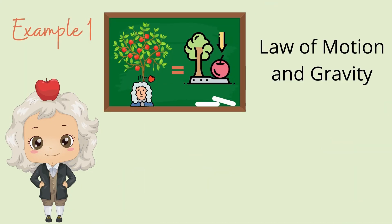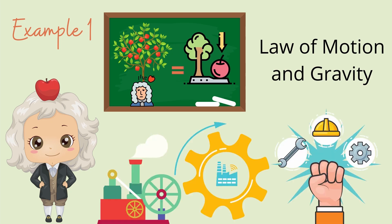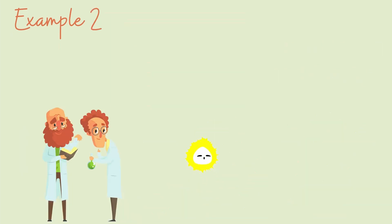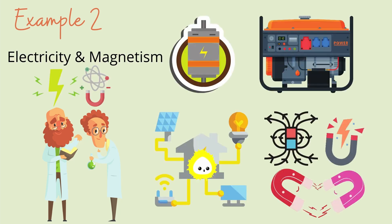For example, Newton discovered the law of motion and gravity that led to the industrial revolution. Michael Faraday and James Clerk Maxwell's theory, an explanation of electricity and magnetism, gave us powerful electric motors and generators.